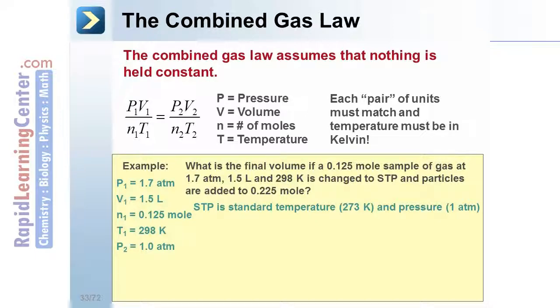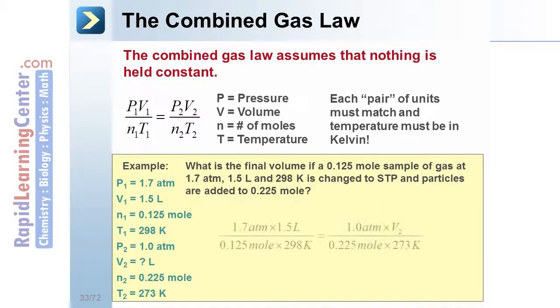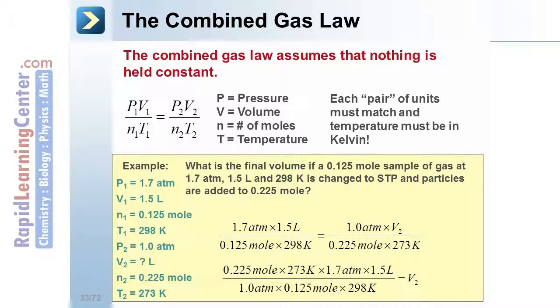The final pressure is standard pressure. We're looking for the final volume if the moles is increased to 0.225, and the temperature is standard temperature. The quantities are plugged into the equation. And algebra is used to solve for the unknown variable. The answer is calculated as 4.2 liters.